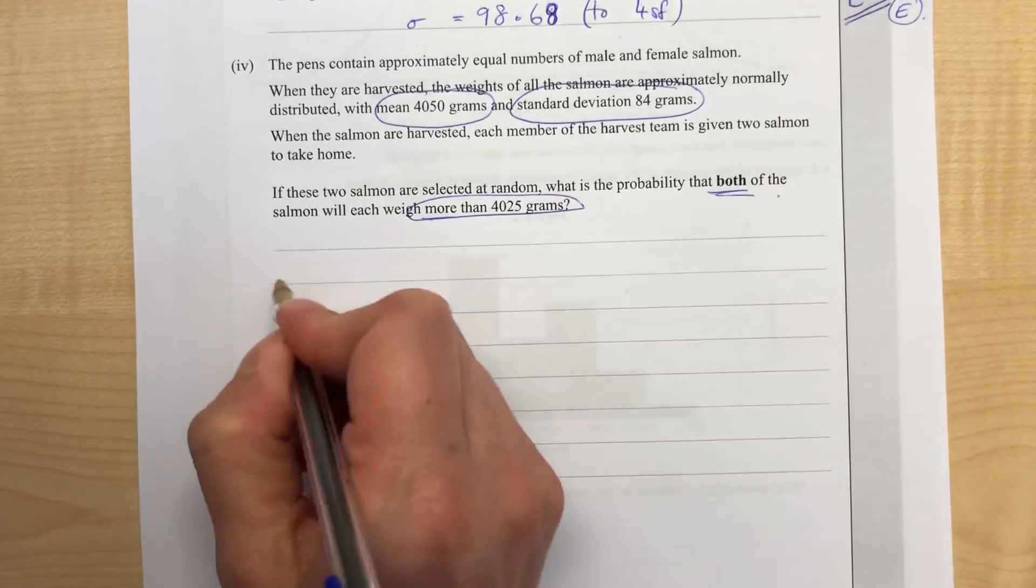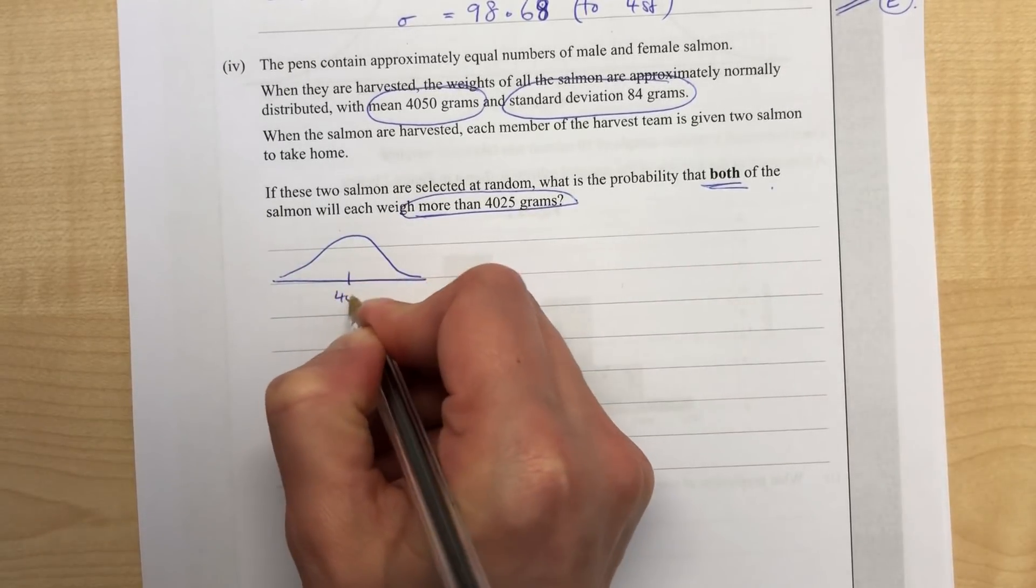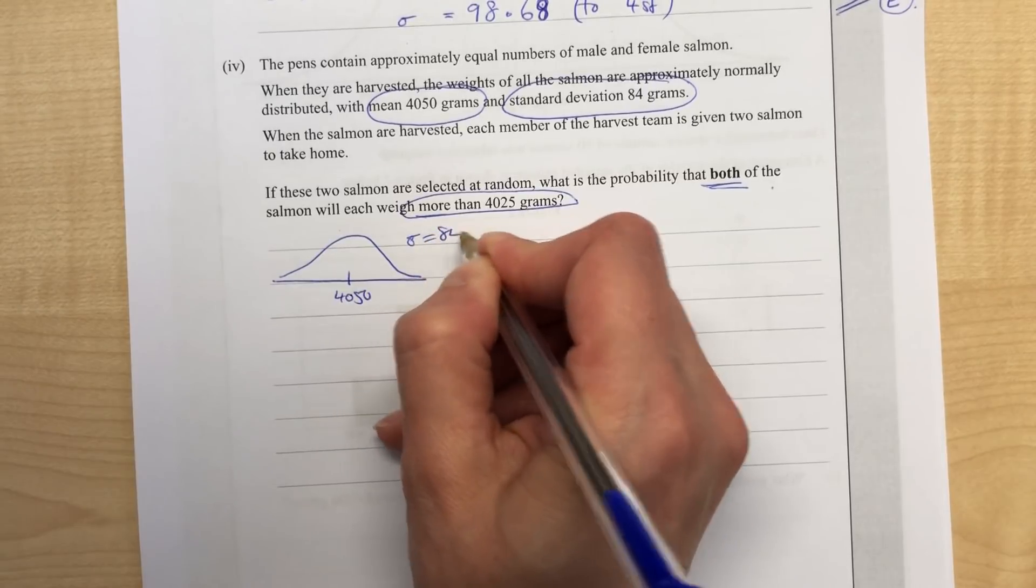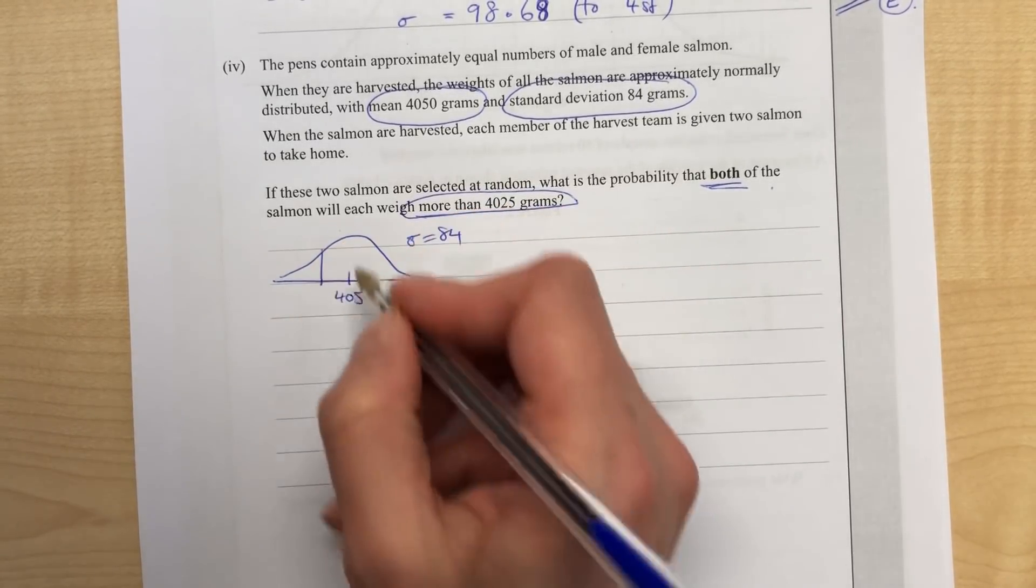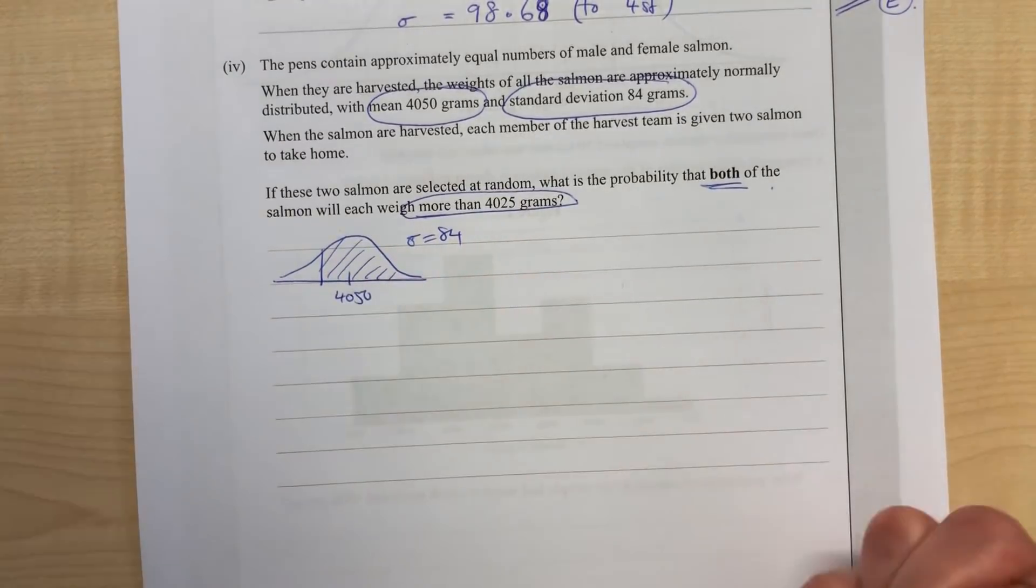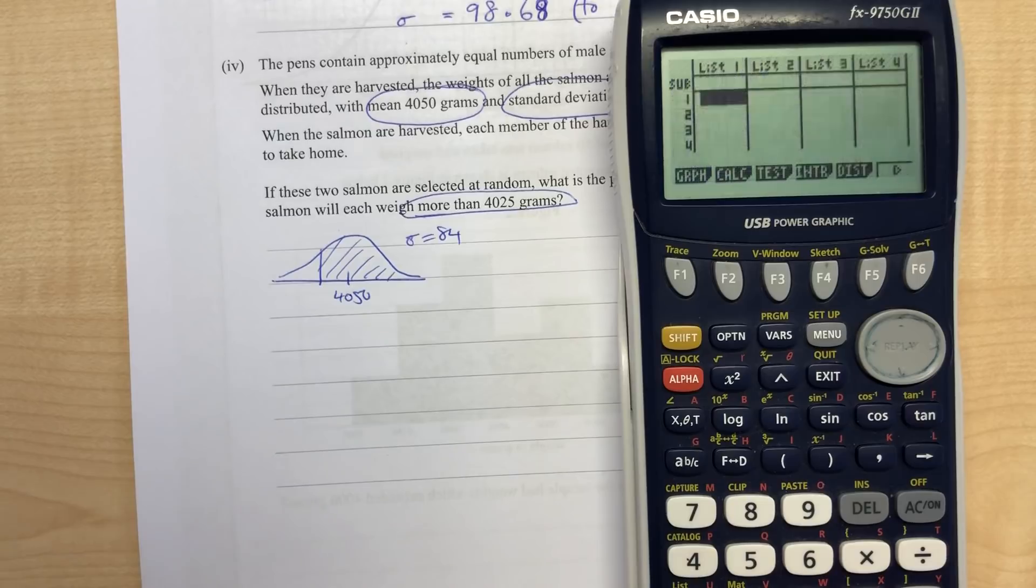First of all, we just want the probability of getting a fish that's more than that. The mean is 4050, standard deviation is 84. We want the chance that it's over 4025.